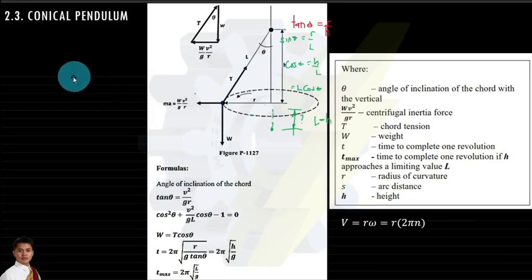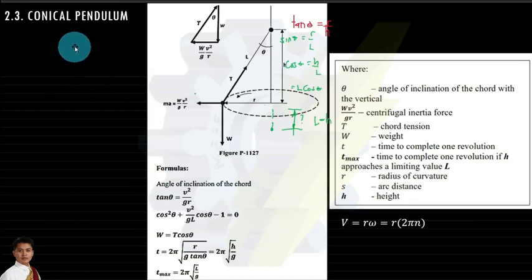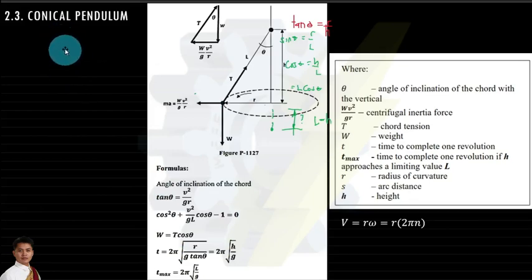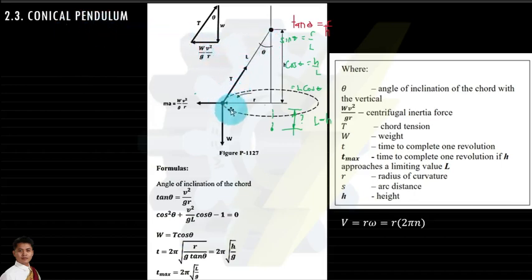For our next topic — conical pendulum — this is our third topic for Chapter 2, curvilinear translation. It is called conical pendulum because the path formed when the object rotates has a conical shape.